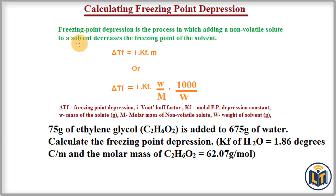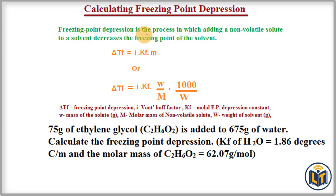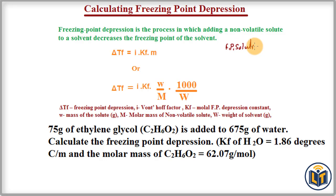Freezing point depression is a change in temperature when we add a non-volatile solute to a solvent. A non-volatile solute is a solute which has a very low tendency to dissociate or evaporate. When we add a non-volatile solute to a solvent, the freezing point of the solvent decreases. That is why in this process the freezing point of the solution is always less than the freezing point of the solvent.